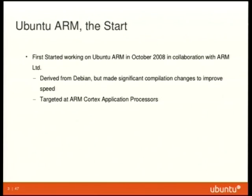We started in 2008. We collaborated with ARM directly. Ubuntu is derived from Debian but we chose not to go the Debian route — Debian compiled for ARMv4, which is a pretty old architecture. We went for ARMv7, so we picked up a lot of different instructions, much faster compilation, much faster running chips. We targeted the ARM Cortex application processors — ARMv7 instead of ARMv4 — so it made a big difference in terms of what the chips are capable of.